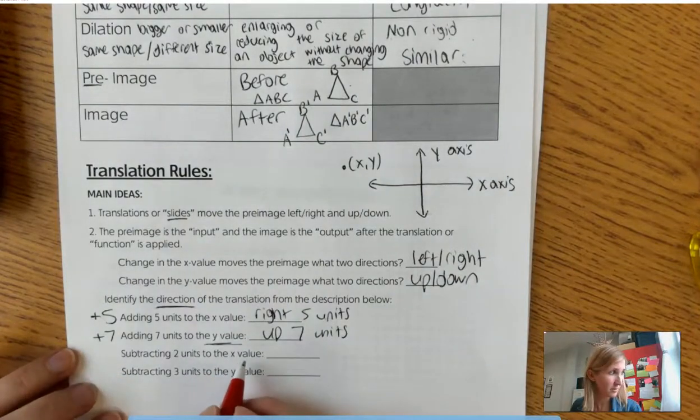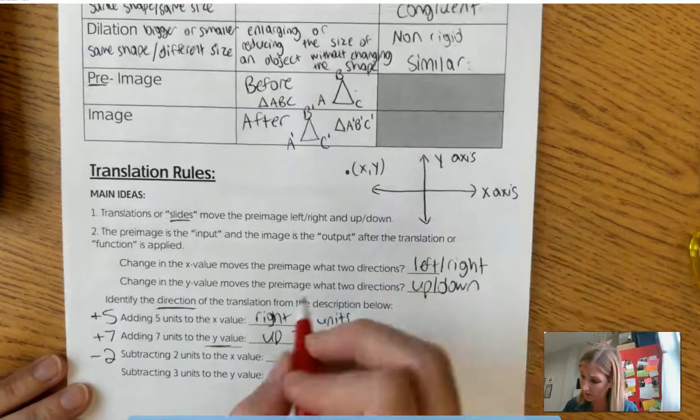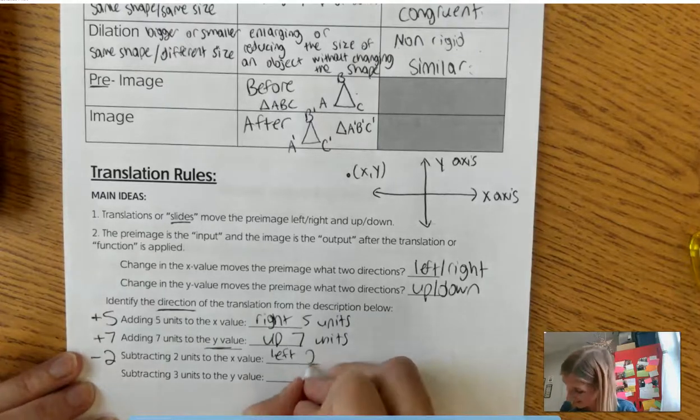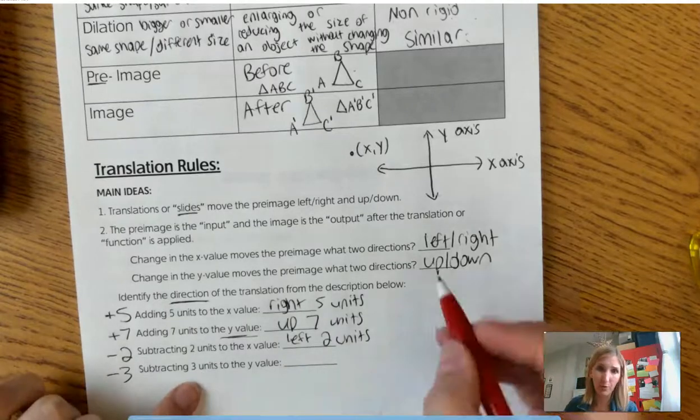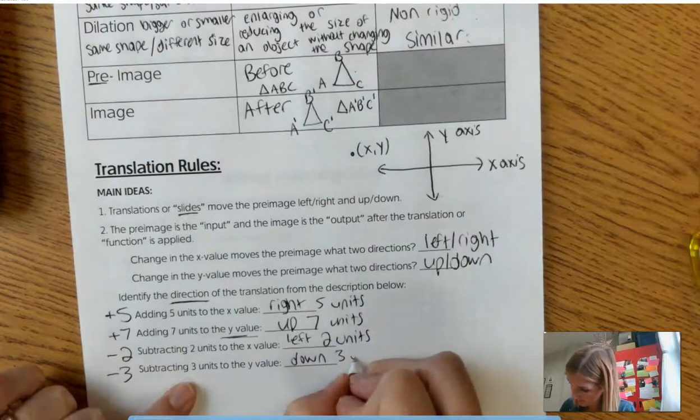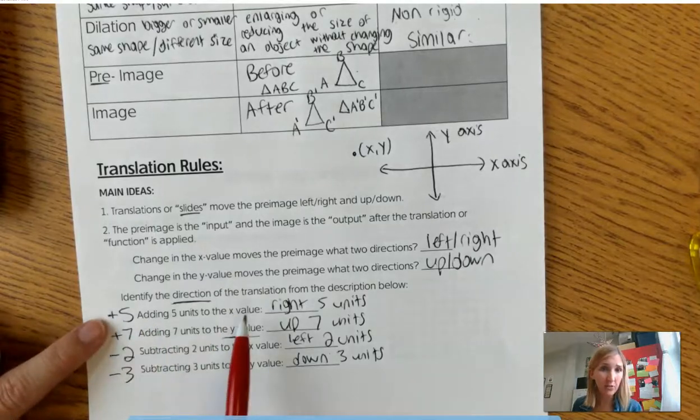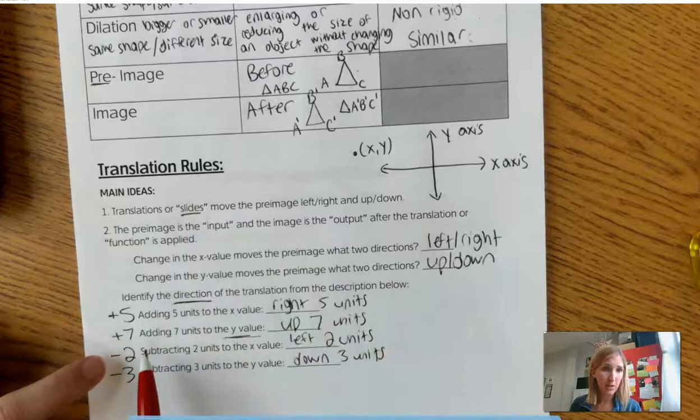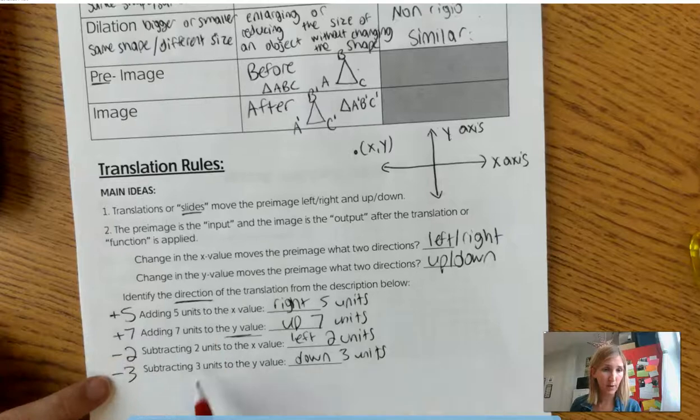Alright. Subtracting two units from the x value. So minus two units. This time I'm going left, right? I mean left, correct? Left two units. And if I'm subtracting three units from the y value, that must mean I'm going down. So adding to the x takes me to the right, adding to the y takes me up, subtracting from the x takes me to the left, subtracting from the y takes me down.